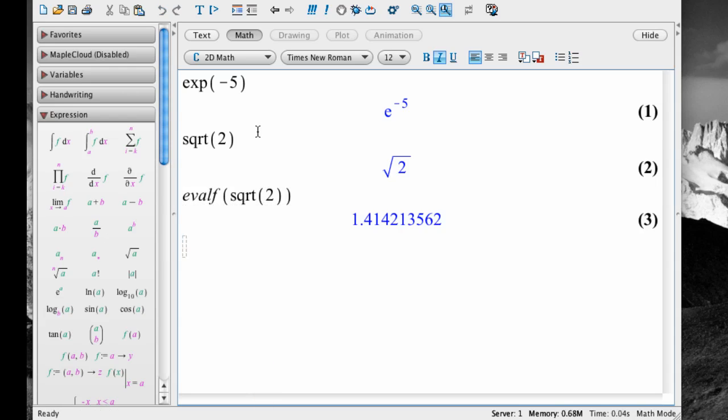To find the natural logarithm, we use ln. Here's the natural logarithm of 7, for instance. Type ln, open parenthesis, 7, close parenthesis, and hit enter. And here's the natural logarithm of e to the fifth, which is of course 5. But notice that Maple does this simplification automatically.